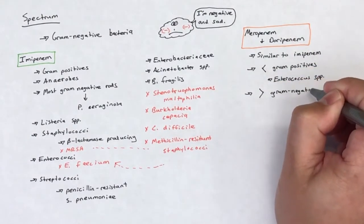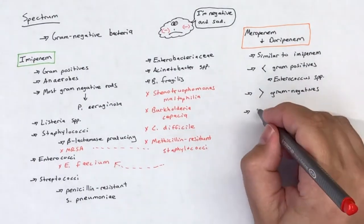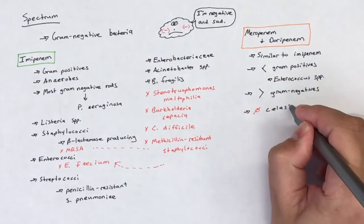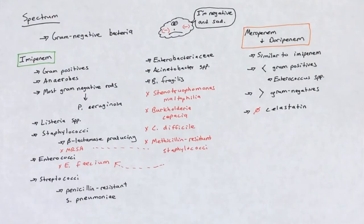The other big difference with meropenem and doripenem is that they are not degraded by renal dipeptidase enzymes and do not require a combination with a renal dipeptidase inhibitor.